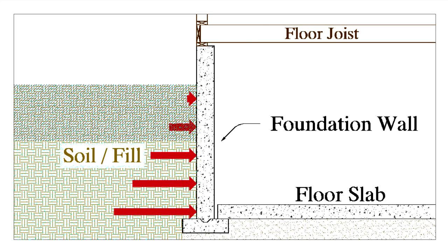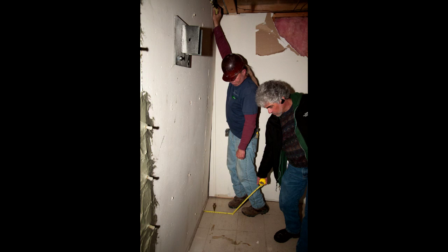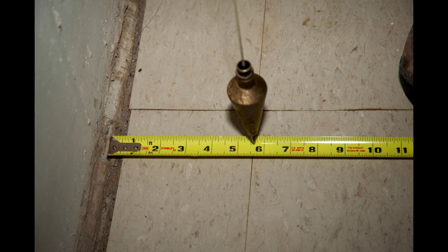If the floor framing is not properly tied to the foundation wall, the foundation wall may move inward under the lateral soil pressure. In the example shown in this video, the floor joists were not toenailed into the sill plate, and the top of the foundation wall had shifted inward approximately five and a half inches.